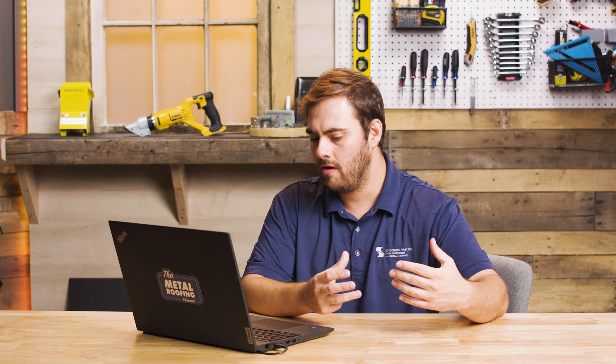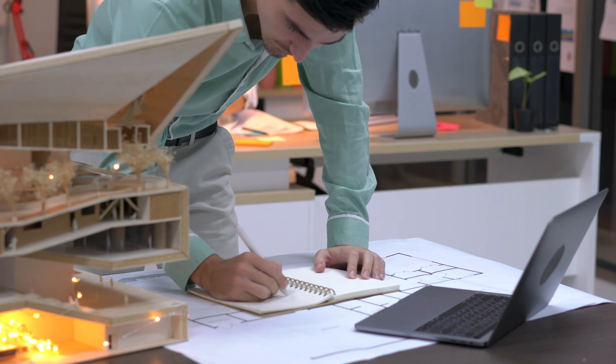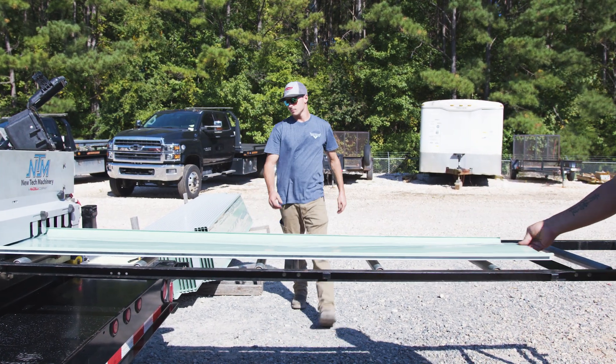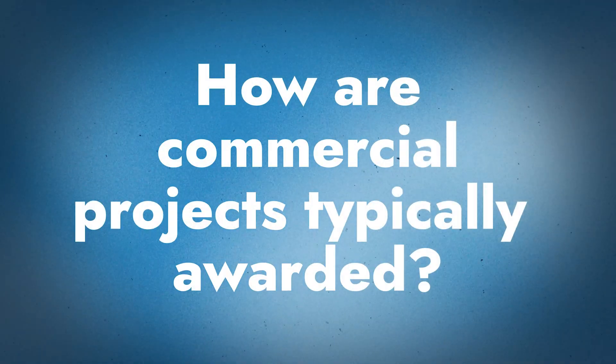Let's start with the roles in the commercial building process — who are the different people and companies involved. On a commercial project, let's start with the architect, who is going to either be in the process of designing or have already designed and specified everything. That project will be awarded to a general contractor, who manages all the different facets. From Sheffield Metals' standpoint, we're concerned with the general contractor but also the commercial roofing company trying to win that project.